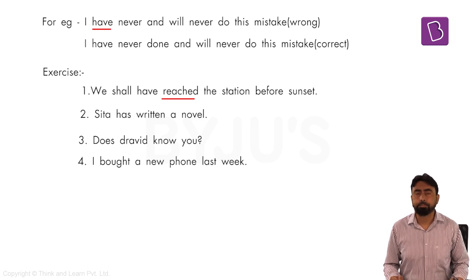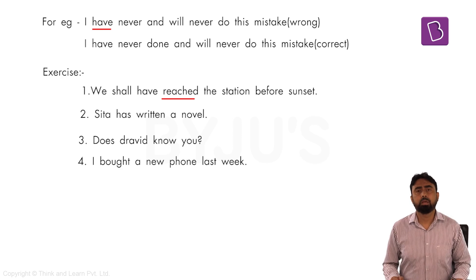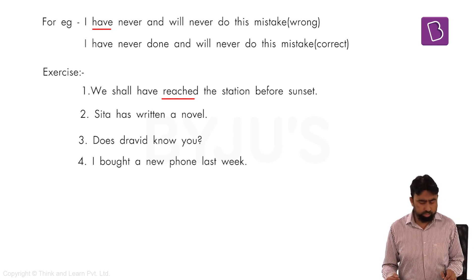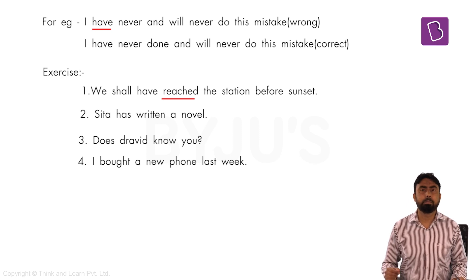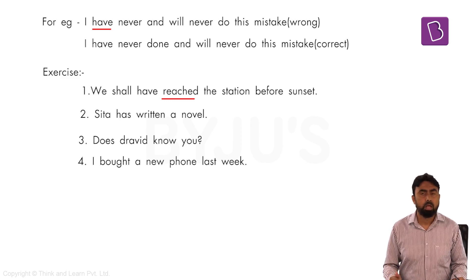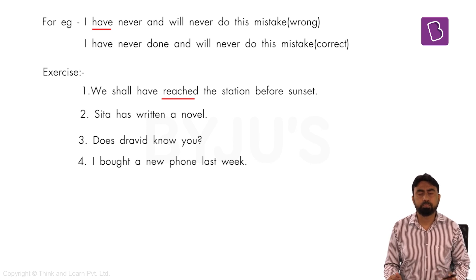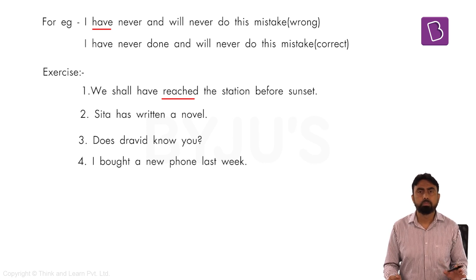An important point for students: never get confused — if a sentence mentions a past time reference, you must only use simple past tense. If the time of the past is mentioned, you cannot use present perfect tense. For example: 'I have submitted my application yesterday' is wrong because 'yesterday' is a past time reference. The correct sentence is: 'I submitted my application yesterday.' Please remember: have/has cannot be used when past time is specified.